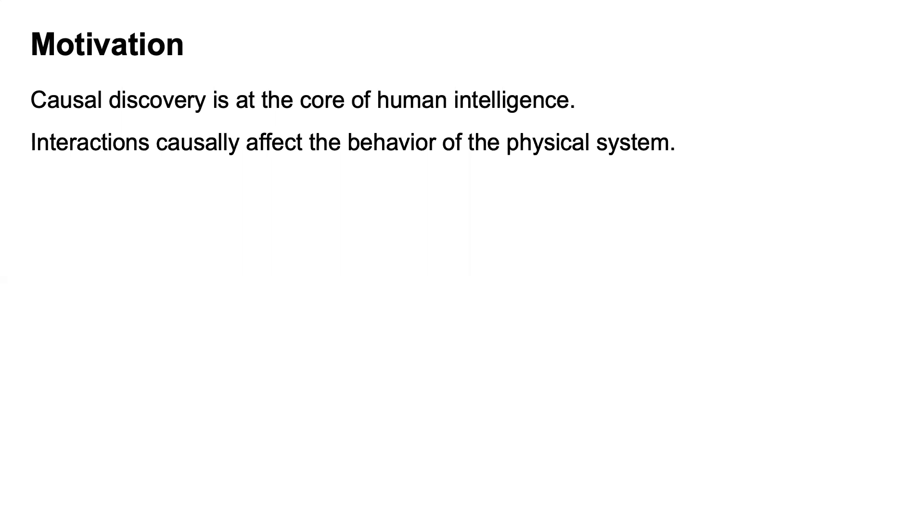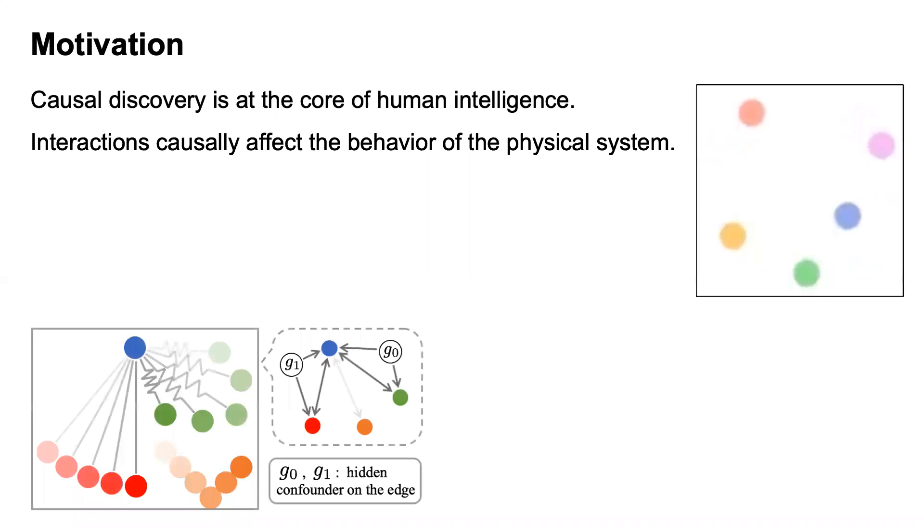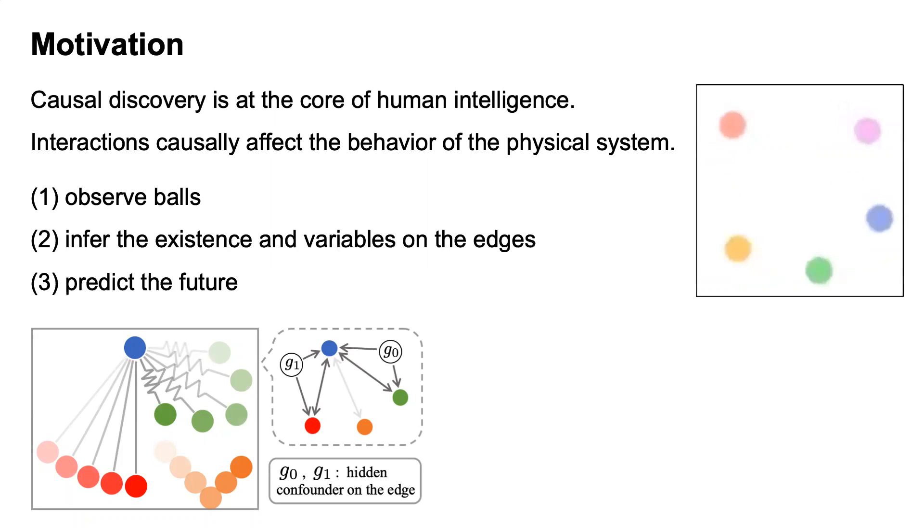It is desirable to understand the underlying causal structure and model the functional mechanisms directly from images. For example, the figure shows balls moving around, connected by invisible physical relations. Hidden confounding variables like edge type and edge parameters causally affect the ball's movements. We humans can observe the balls, infer the existence and variables on the edges, and predict the future.